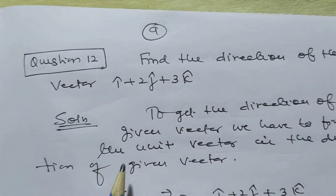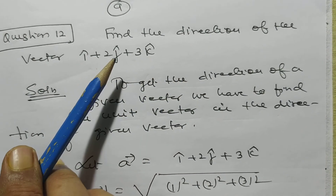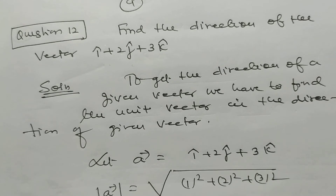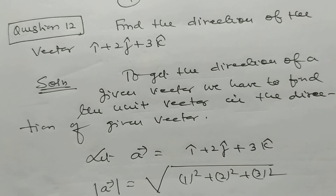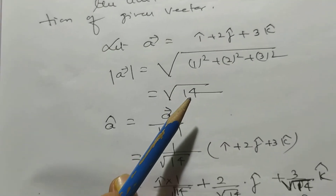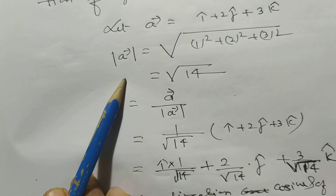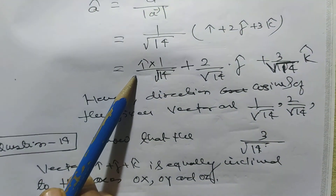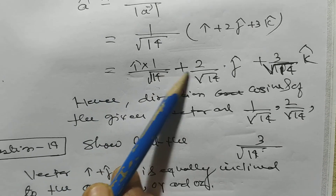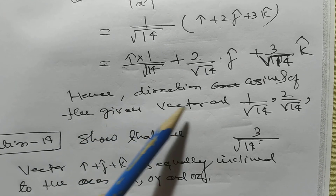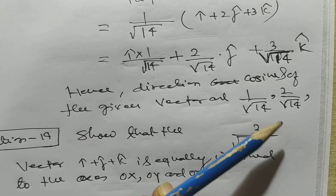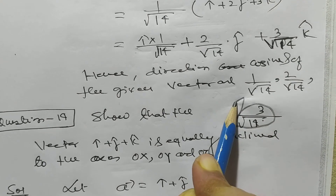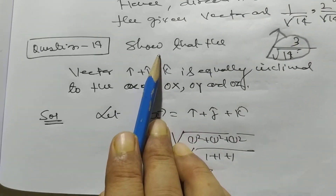Problem number 12: find the direction of the vector i + 2j + 3k. We simply find its unit vector, which gives us the direction. Vector a = i + 2j + 3k, and its magnitude is √(1+4+9) = √14. So dividing by magnitude: (1/√14)(i + 2j + 3k) = (1/√14)i-cap + (2/√14)j-cap + (3/√14)k-cap. Hence, the direction cosines of the given vector are 1/√14, 2/√14, and 3/√14.